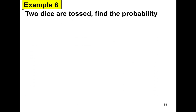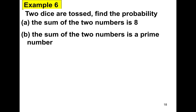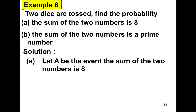For our example, example 6: assume that two dice are tossed. Find the probability that A) the sum of the two numbers is 8, and B) the sum of the two numbers is a prime number. For our first question A, let A be the event that the sum of the two numbers is 8.